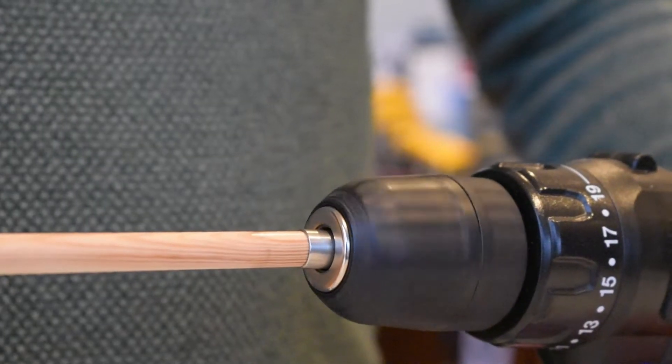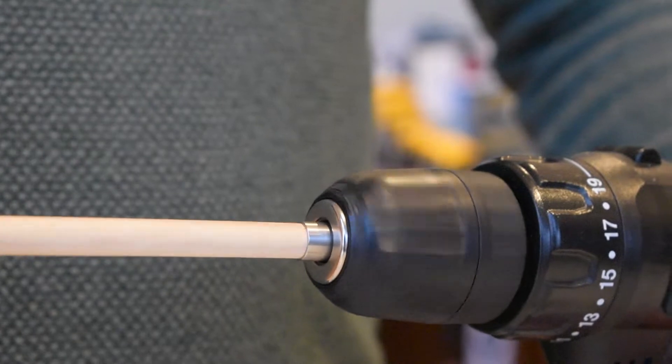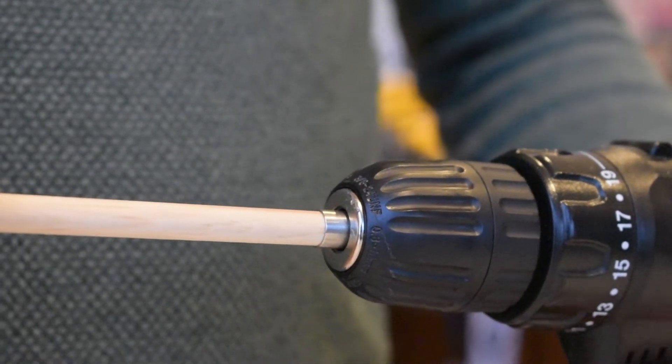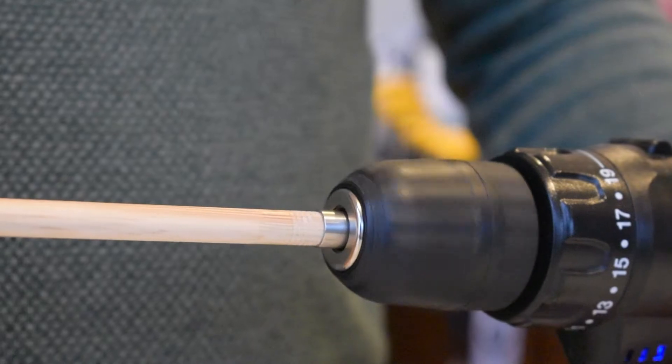Carefully line up the shaft with the tool and push it into the drill while spinning. You will feel the shaft being pulled in until it stops. This means it's fully tapped.